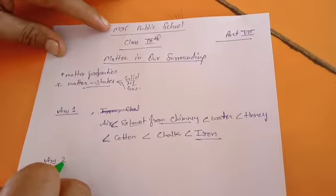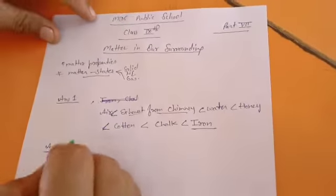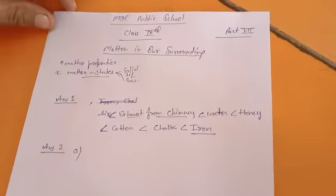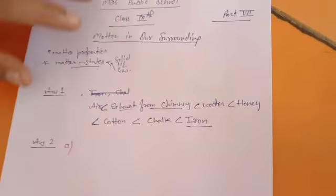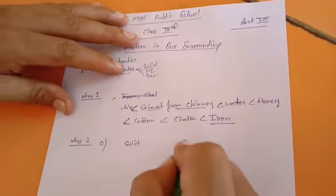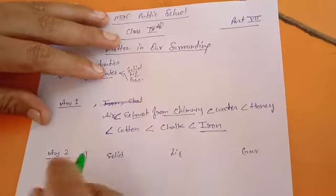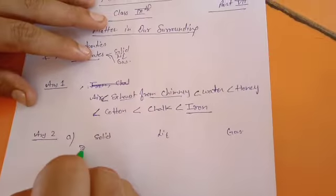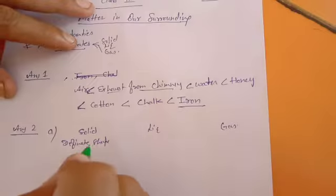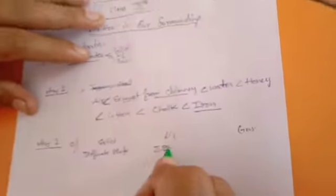Now answer two. It is given in two parts, A and B. In part A, you want to state the differences between the different states — solid, liquid, and gas — which we have already read in the previous lecture. For shape: solid has definite shape, liquid has indefinite shape, and gas also has indefinite shape.